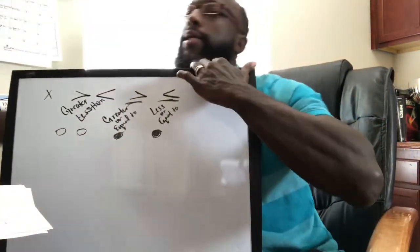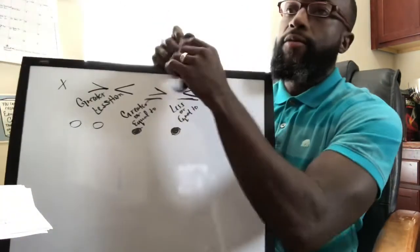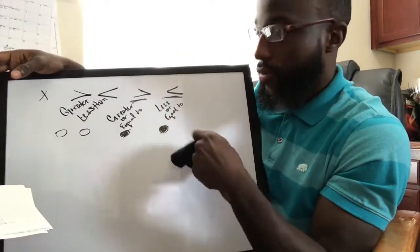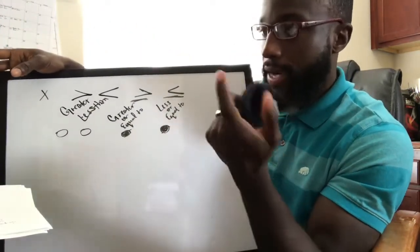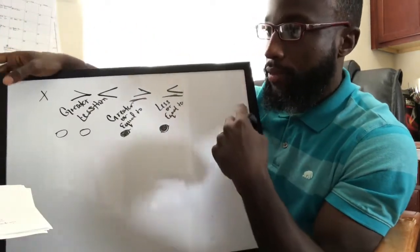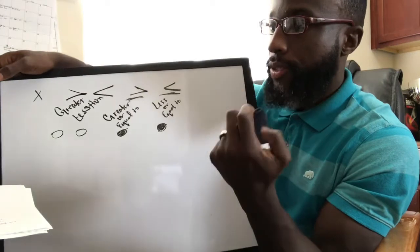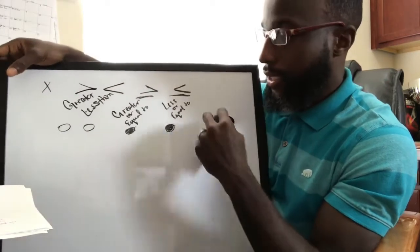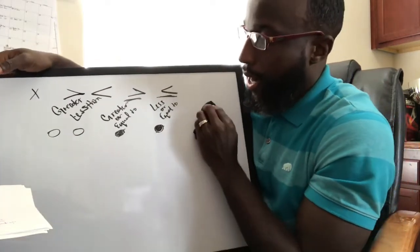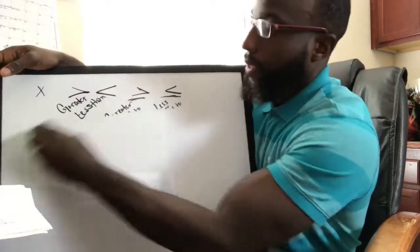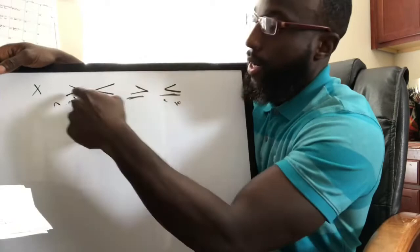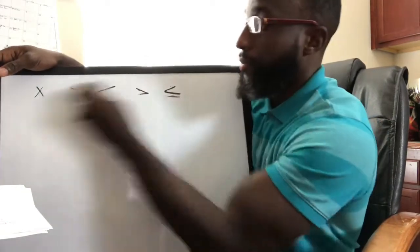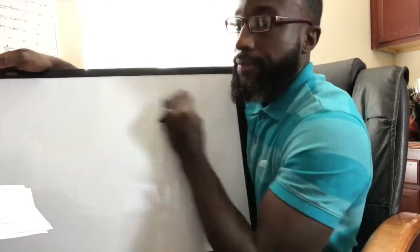Let's look at writing linear inequalities. From writing linear inequalities, we'll talk about graphing and looking at solutions. So we have: greater than, less than, greater than or equal to, and less than or equal to.